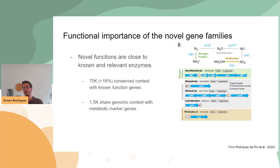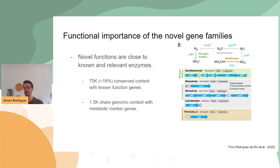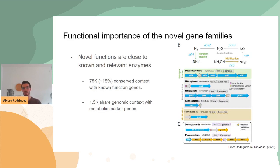Around 20 percent of the novel gene families are in conserved genomic context with known-function genes, meaning they are possibly involved in known pathways. There are actually 1,500 that share genomic context with very important metabolic marker genes. For example, we found novel gene families next to genes involved in almost all steps of the nitrogen cycle. We also found novel gene families in other very relevant genomic contexts, for example surrounded by antibiotic resistance genes — many very promising candidates involved in relevant biological processes.